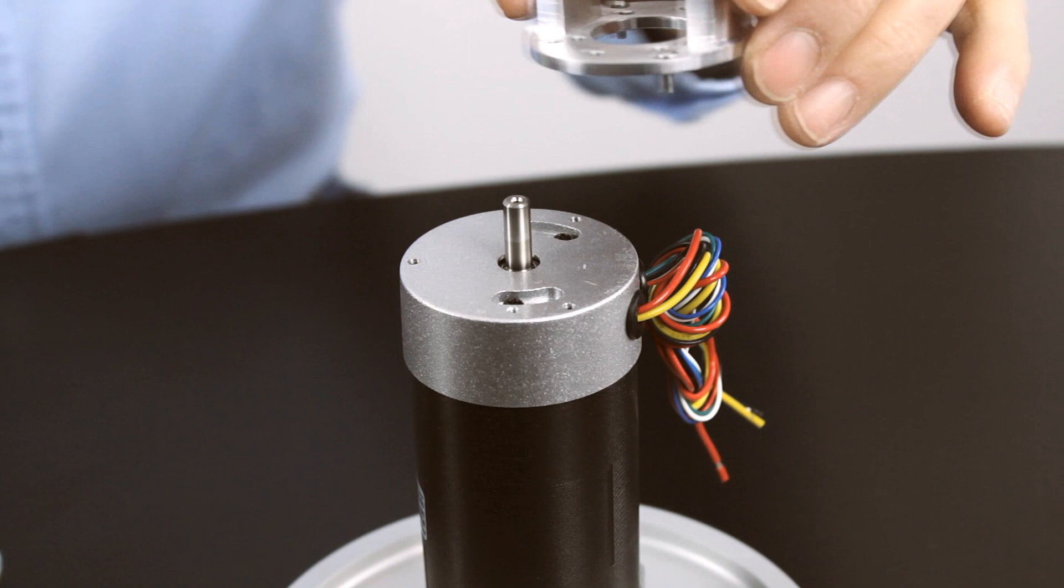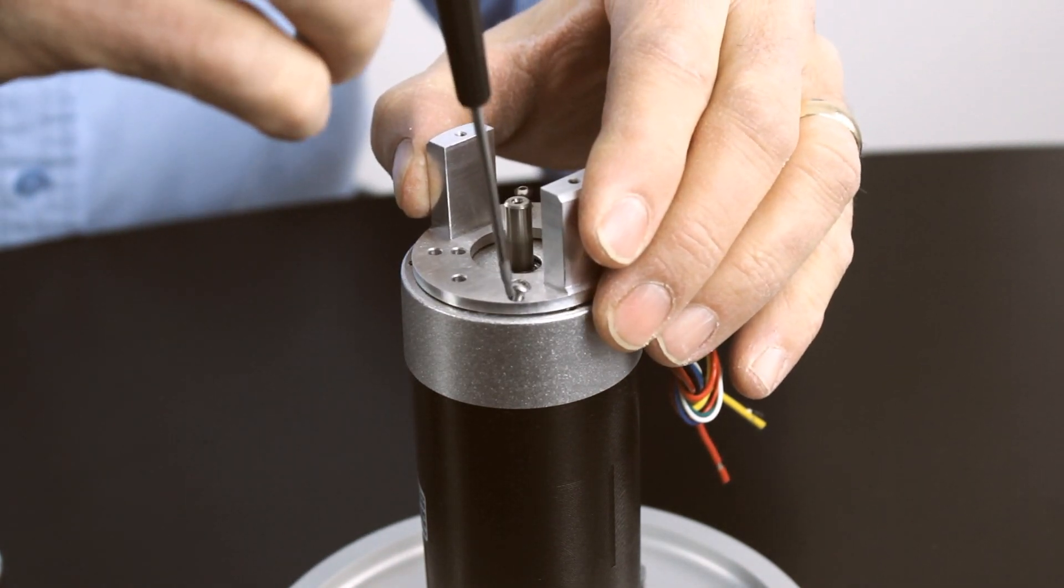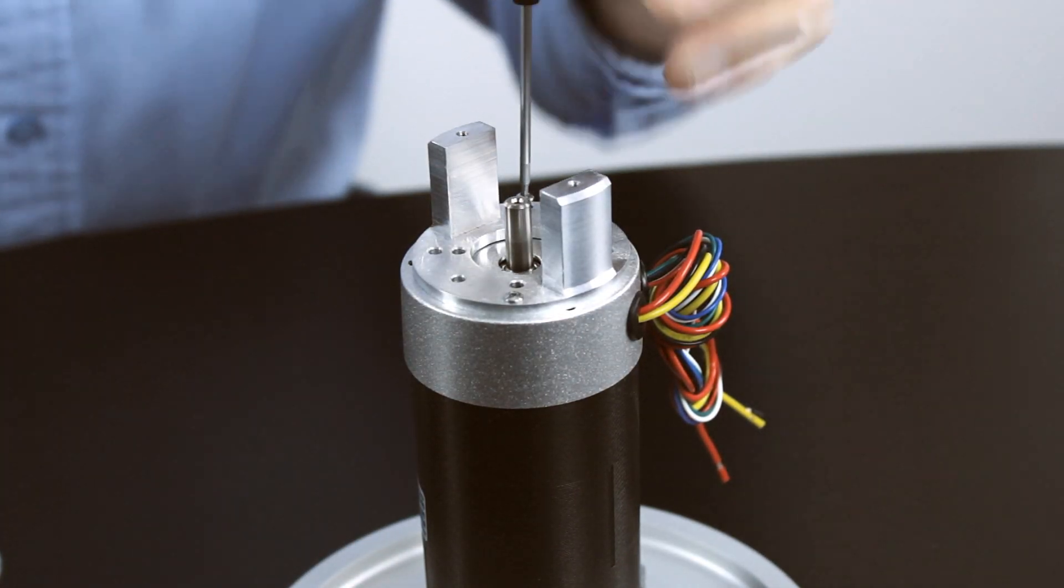First, the adapter plate is fastened onto the motor using the pre-drilled holes to center the encoder over the shaft.